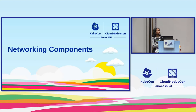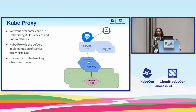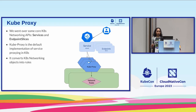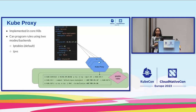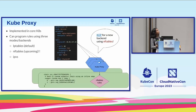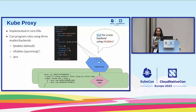Moving on to networking components: we have kube-proxy, which is the default implementation of service proxying in Kubernetes, and it's been around for a really long time. Kube-proxy converts Kubernetes API objects — services and endpoint slices — into networking rules. We have two backends supported today: the iptables backend, which is the default, where iptables rules are created for every service endpoint slice; and the IPVS backend.